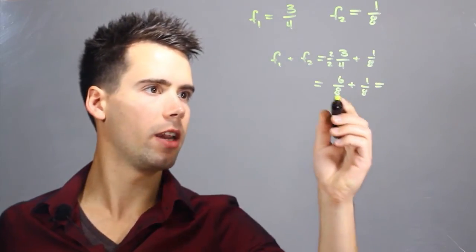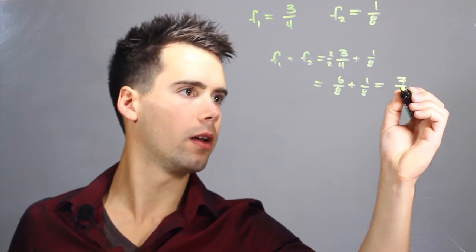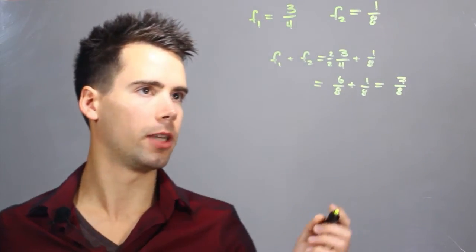Now that the denominators match we can add the numerators to find that F1 plus F2 equals 7 over 8.